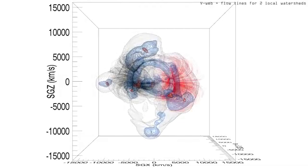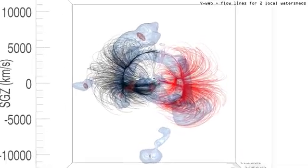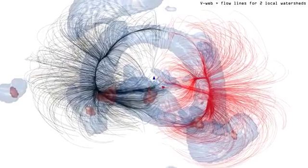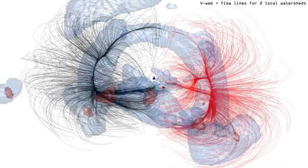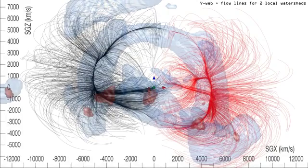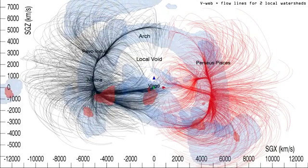We see local velocity flows in two adjacent regions. We live in the region of the black flow lines but we are near the transition to the red flow lines associated with the Perseus Pisces Basin of Attraction.